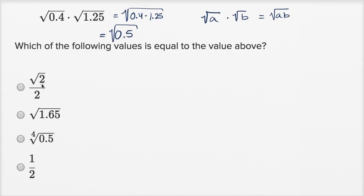If I look at the choices over here: this is the fourth root of 0.5, so that's not it. This is the square root of 1.65, so that's a different value. This is 0.5, not the square root of 0.5. This is just 1.5, but we want the square root of 1.5, so that's not it either.